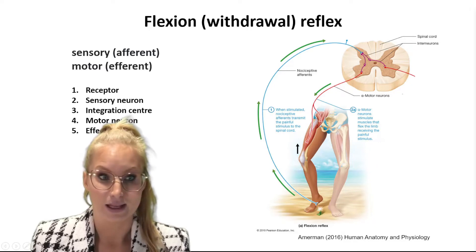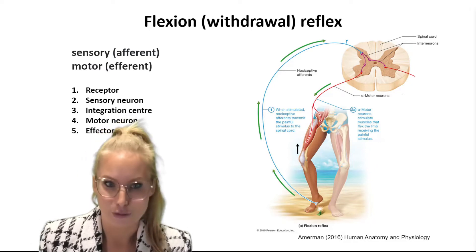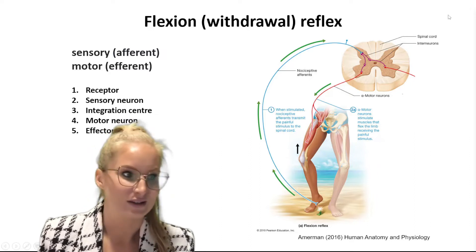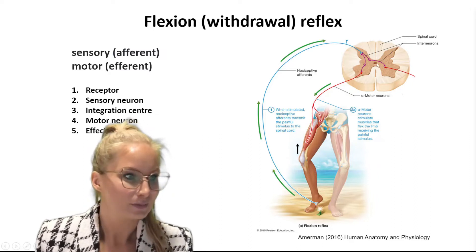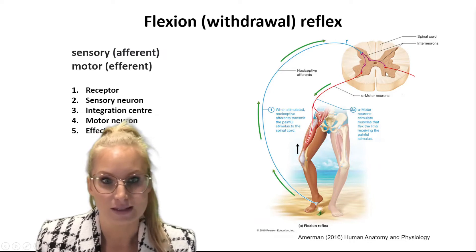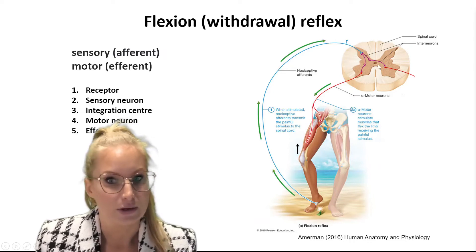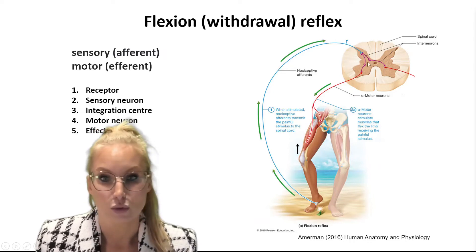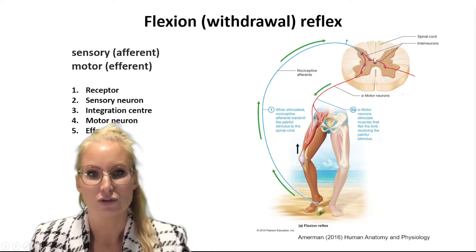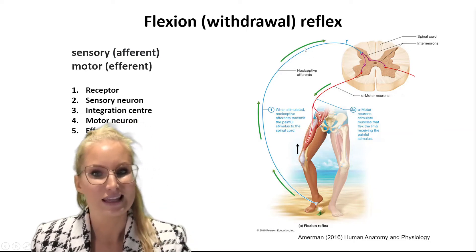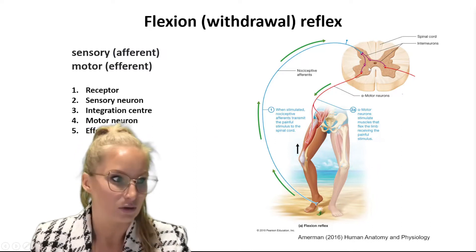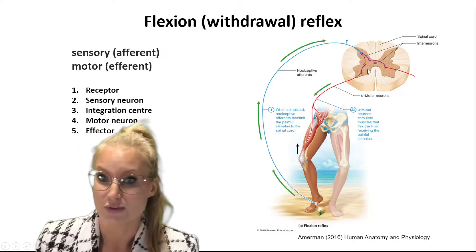The third component of the reflex arc is the integration center. In this scenario, the integration center consists of a neuron or neurons — interneurons — in the spinal cord. These interneurons take the signal from the sensory neuron and send it off to wherever else it needs to go.